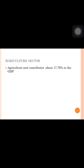Hi everyone. This chapter gives an overview of the Indian economy. We have already learned about one sector, and the last lesson covered the industrial sector. Now we are learning about the agriculture sector.